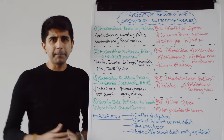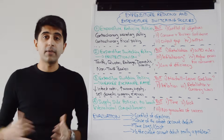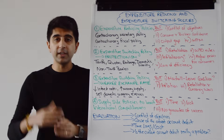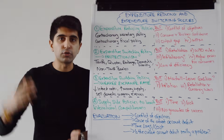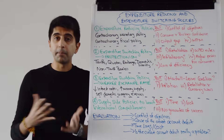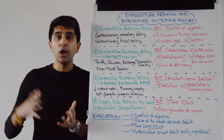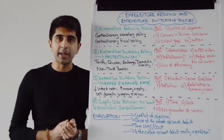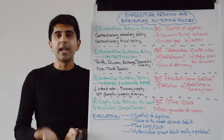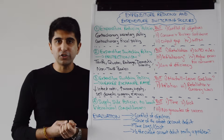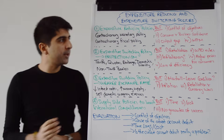Examples of contractionary monetary policy include raising interest rates and reducing the money supply. Examples of contractionary fiscal policy include reducing government spending in the economy and increasing taxation levels in the economy.